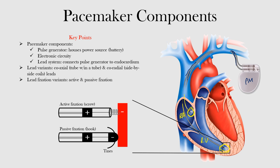Here we can see active fixation and passive fixation. In this blown-up image, the red area represents the myocardium. In the active form, you have the anode and cathode, and the active lead essentially screws or inserts itself directly into the myocardium for stability. In passive fixation, there are tines that act like hooks, interfacing with the myocardium but not actually inserted into it. These inner tines anchor the leads in passive fixation.